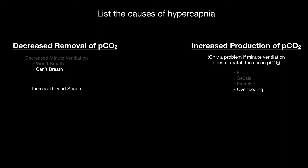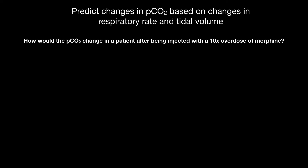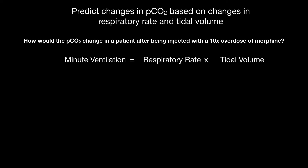Let's predict changes in PCO2 based on changes in respiratory rate and tidal volume. How would PCO2 change in a patient after a 10-times overdose of morphine? Patients overdosing on morphine are less likely to breathe. Their tidal volumes and respiratory rates go down, so minute ventilation decreases. This is compounded because opiates decrease the activity of chemoreceptors located in the medulla, so the PCO2 rises even more and the body doesn't respond to it.